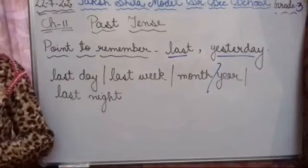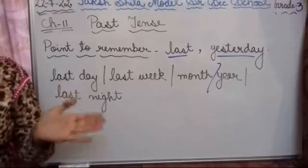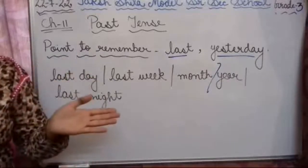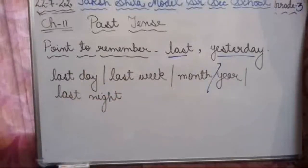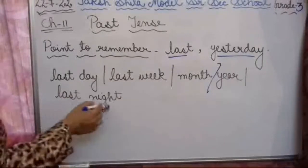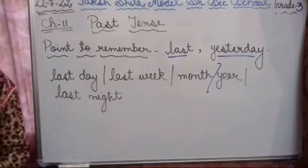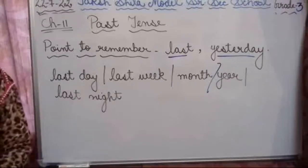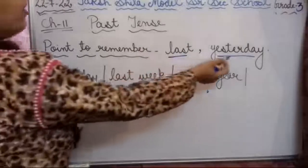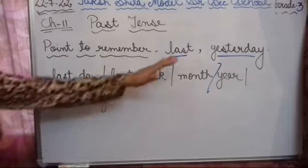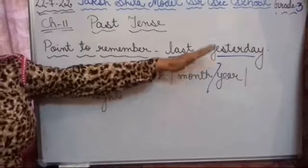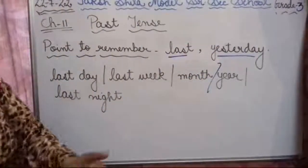For example: 'I went to Delhi last week.' 'I cleared my exam last year.' 'I was in grade 1 last year.' 'He slept with his grandmother last night.' Similarly, with yesterday: 'Yesterday, I went to Delhi with my father.' 'Yesterday, my mother cooked delicious food.' 'Yesterday, my sister fought with me.' Wherever you find 'last' or 'yesterday,' it means we are talking about past tense.